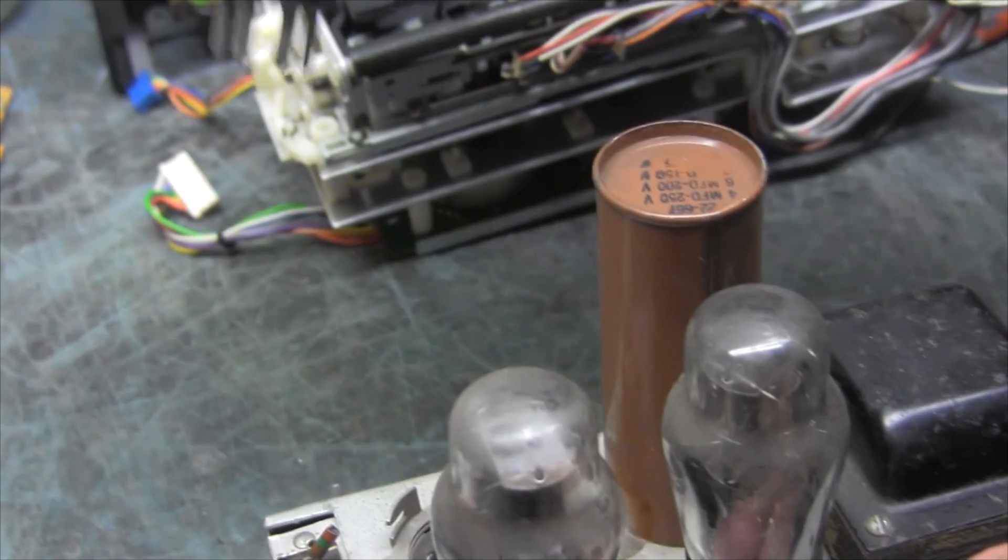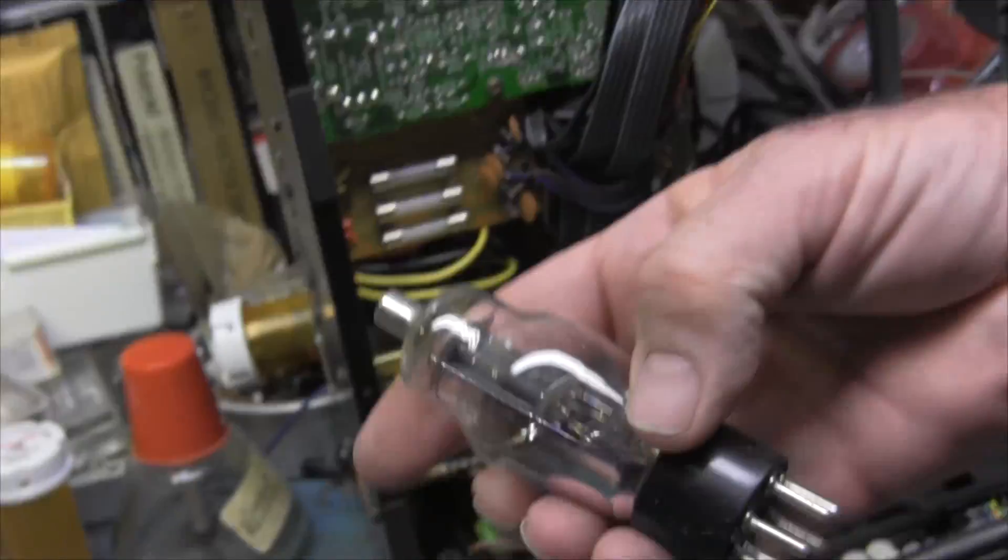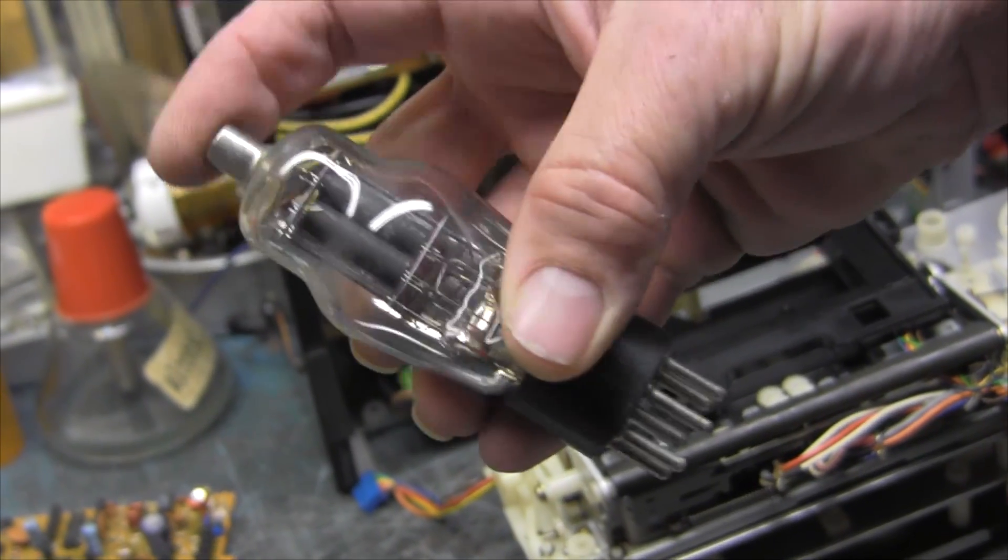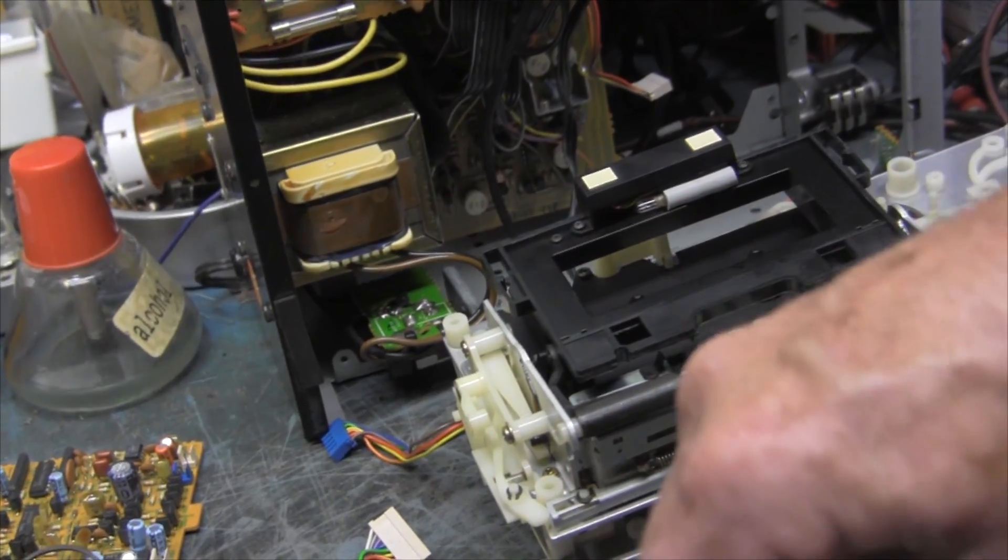And this is an odd tube, it's a 79, it's a double triode with one grid connected to a grid cap. I don't know what this came out of or what it was used for.